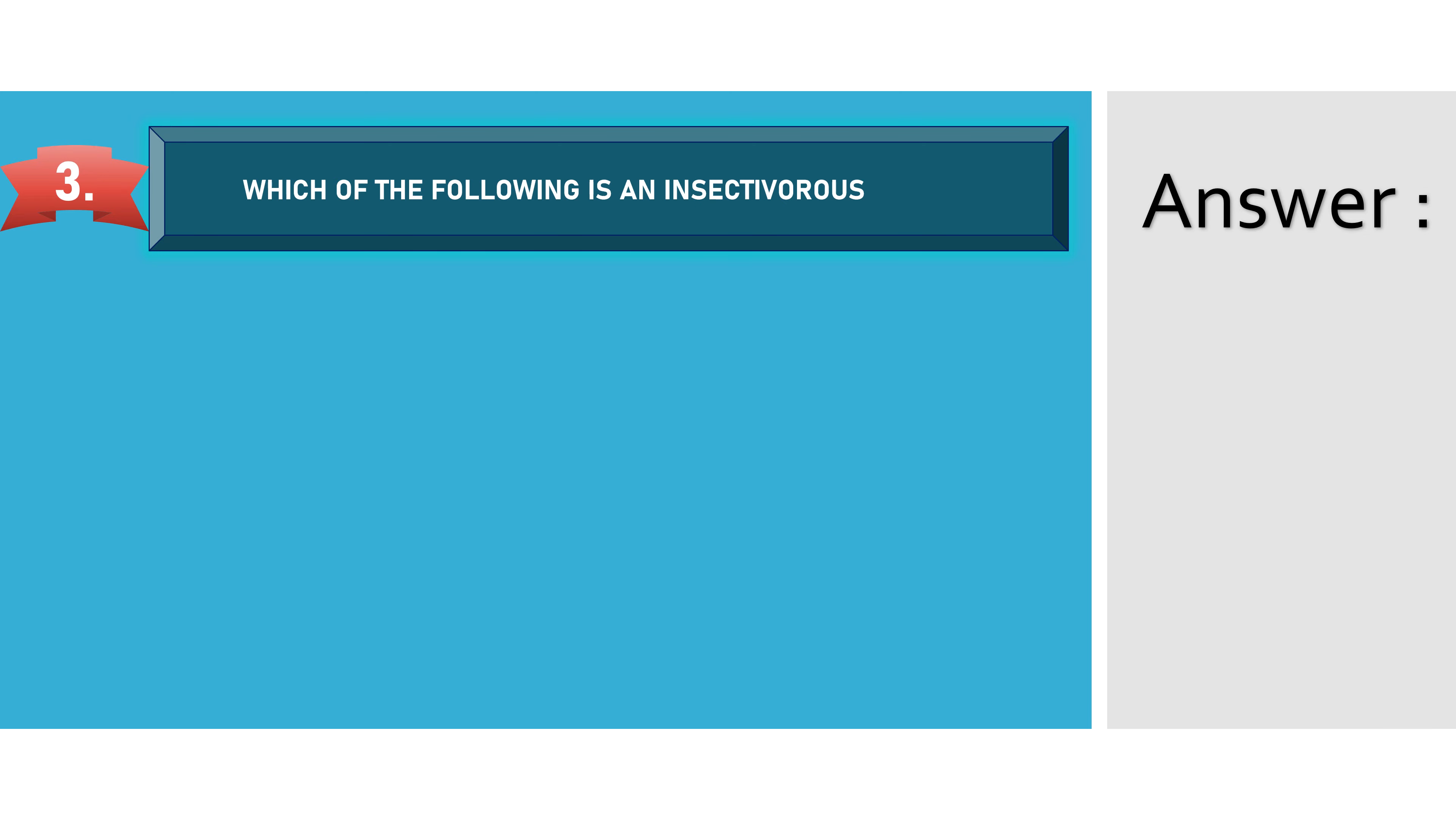Which of the following is an insectivorous plant? Option A: Cascata. Option B: Sundew. Option C: Coral root. And Option D: Mistletoe. The answer is sundew.